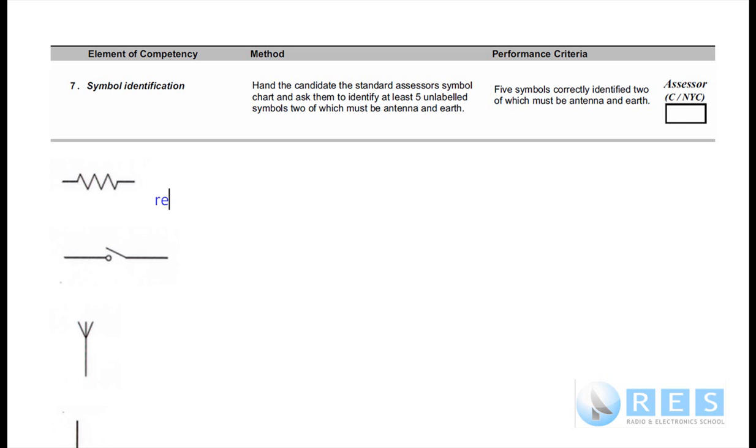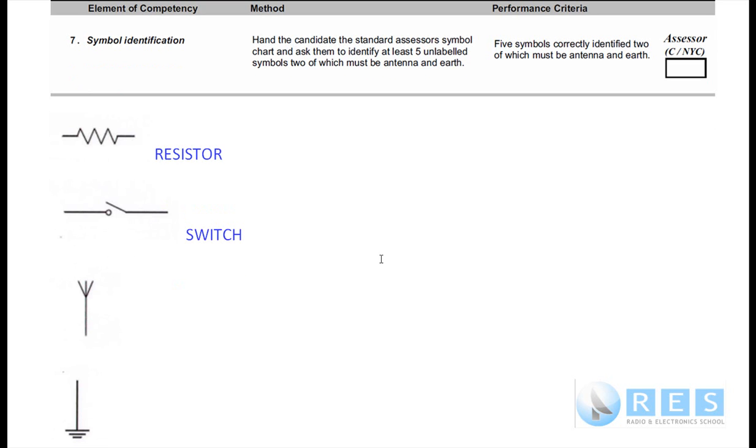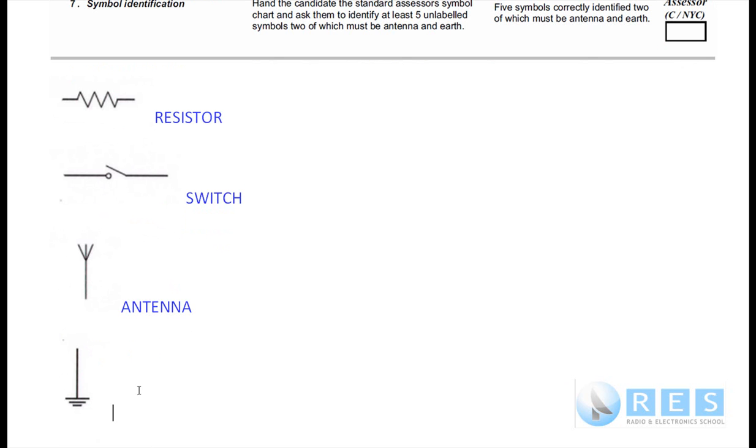The first one is a resistor. A resistor resists the flow of current. The next one is a switch. You don't have to say what sort of switch it is, it's a single pole single throw switch, but it's just a switch for your purposes.